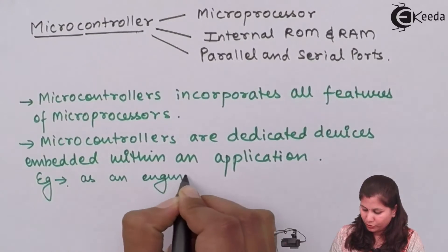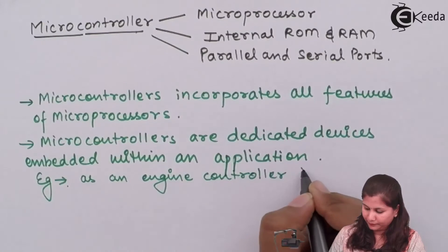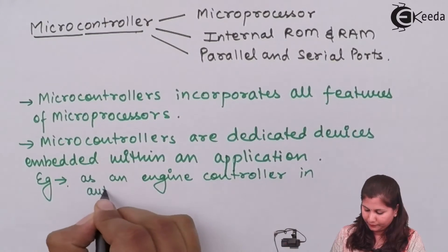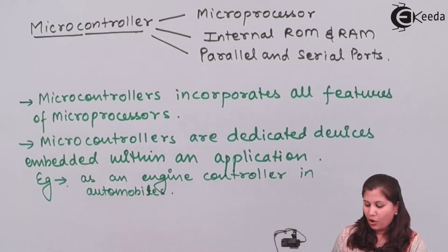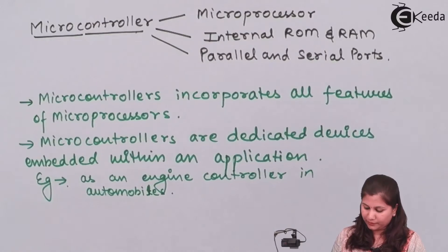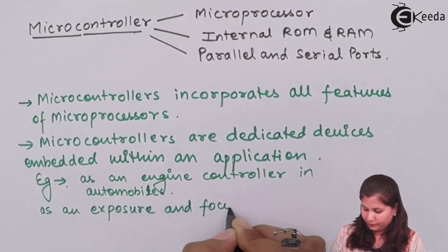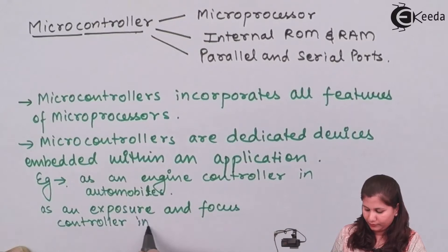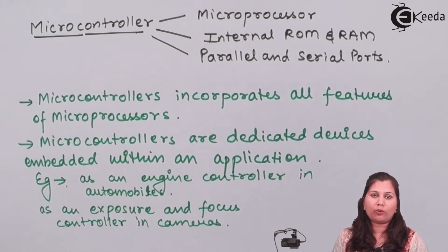Microcontrollers are used as engine controllers in automobiles and also as exposure and focus controllers in cameras. So in all applications where controlling is required, microcontrollers can be used.